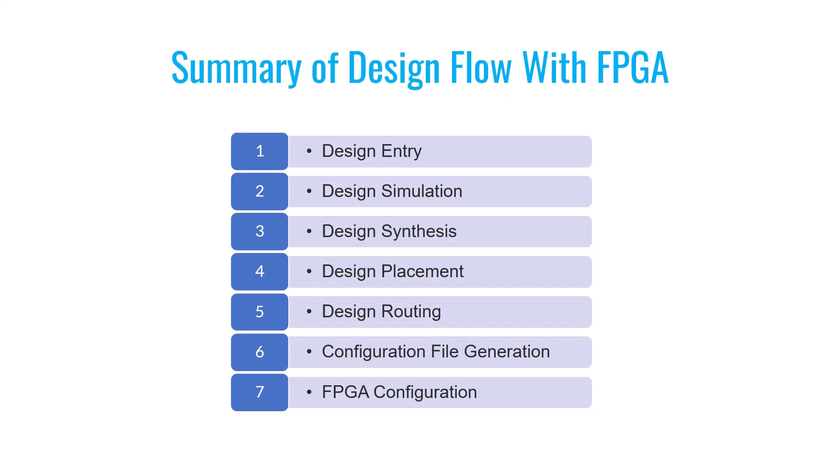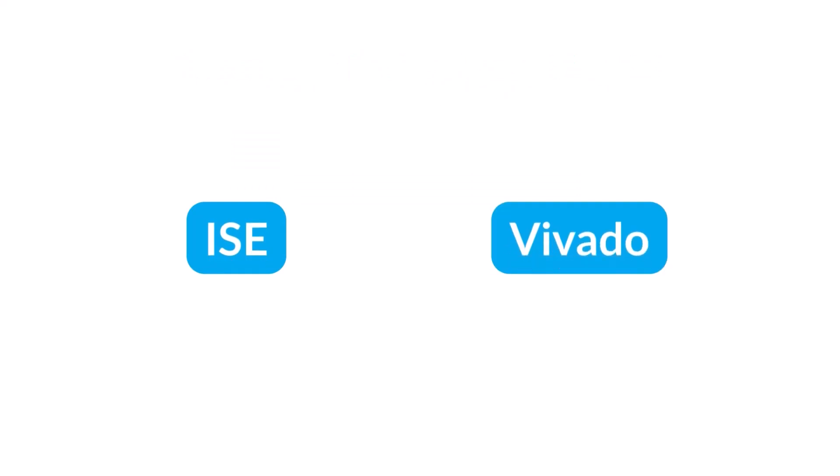The good news is that you can manage all of these steps using special implementation software designed for FPGA work. Every FPGA manufacturer provides specific software to handle all these steps. For example, Xilinx offers two options: ISE software and Vivado software. Depending on the FPGA you are using, you'll need one of these tools, and with them you can handle all seven stages of FPGA design without needing any additional software.